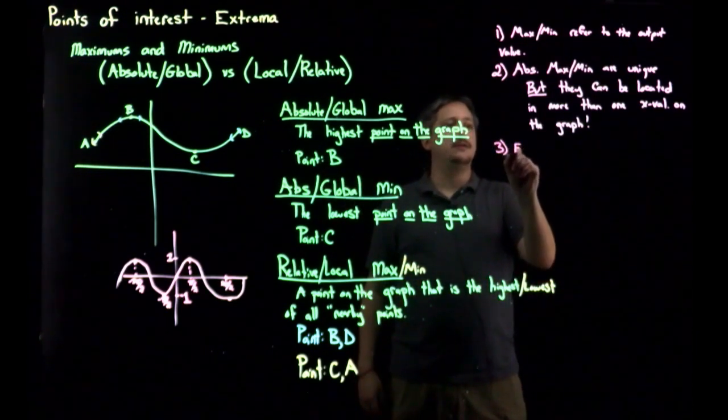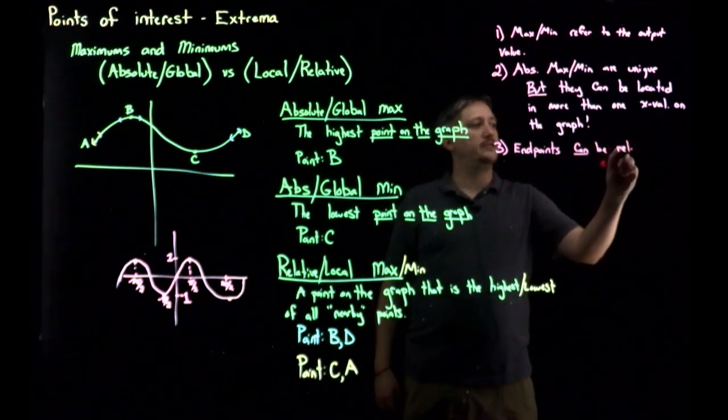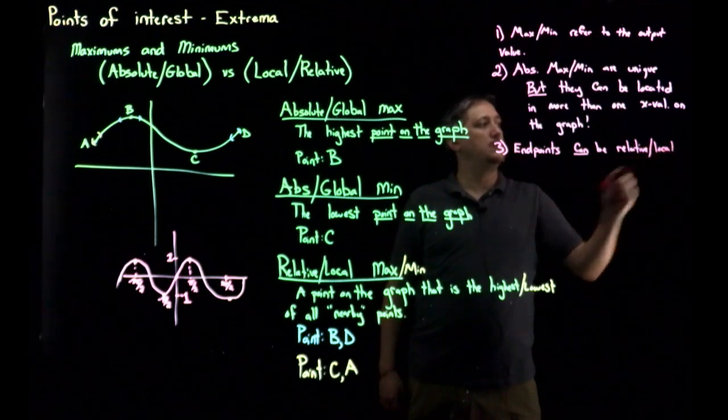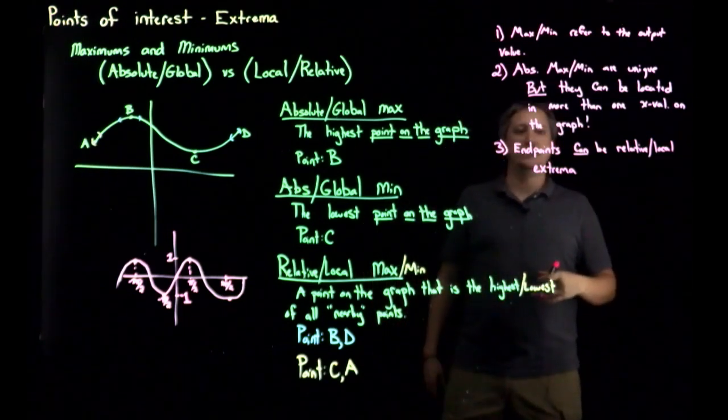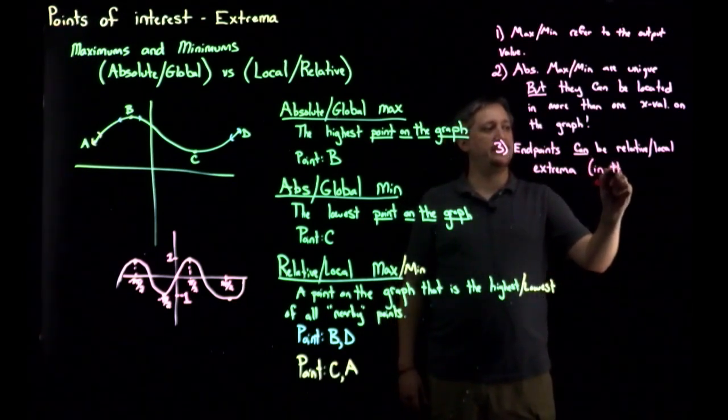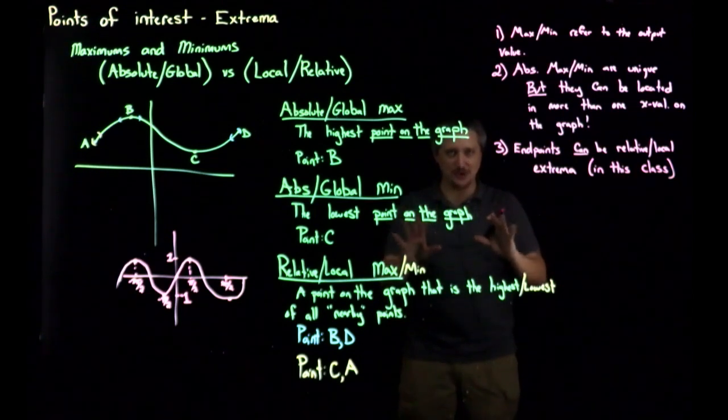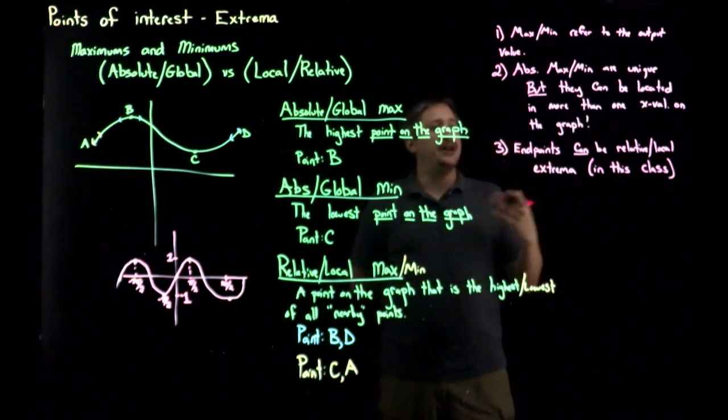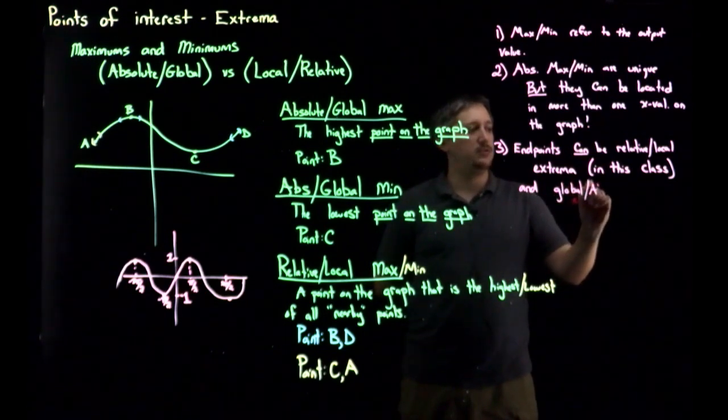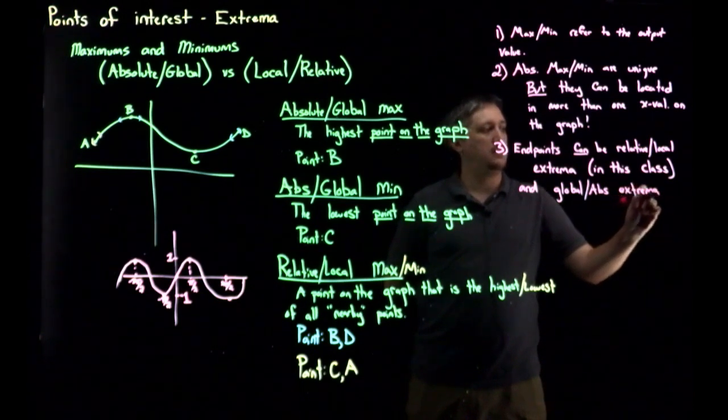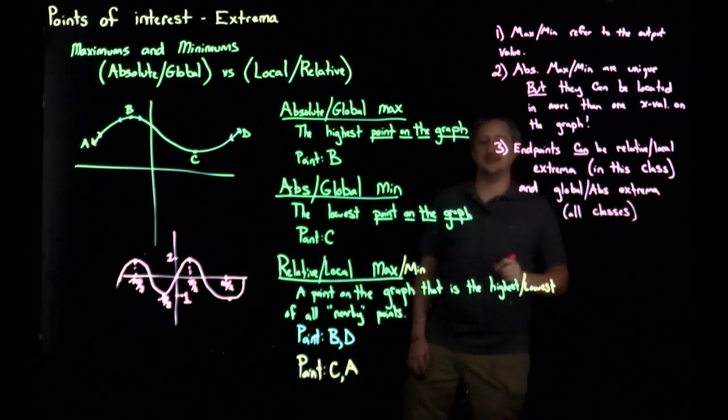Likewise, endpoints in this class can be relative, local extrema. So extrema is what we say when we mean max or min. So they can be local, relative extrema in this class. I recognize not everybody agrees with this. I would feel happy to argue the point with them, but they're not going to come argue with me. So I'm just letting you know. So when you move forward, you're not ambushed by this. But everybody agrees that they can be global or absolute extrema. This is true for all classes. There's no ambiguity there.